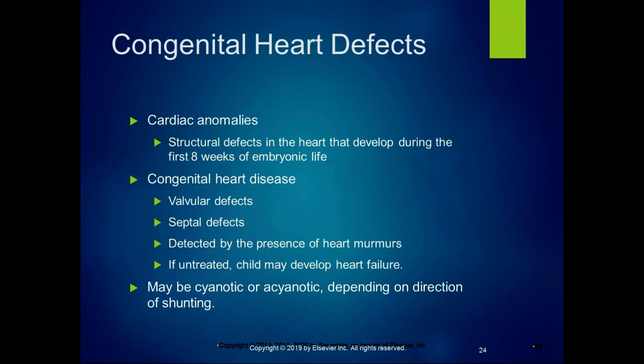Sometimes they are detected by the presence of heart murmurs. Some of them, if untreated, the child may develop heart failure. We talked about childhood congestive heart failure in the last section, and congenital heart defects can cause that. The child might be cyanotic or acyanotic depending on the direction the blood is being shunted. Cyanotic means they have a blue tinge — their lips, nail beds, or mucous membranes might be blue.